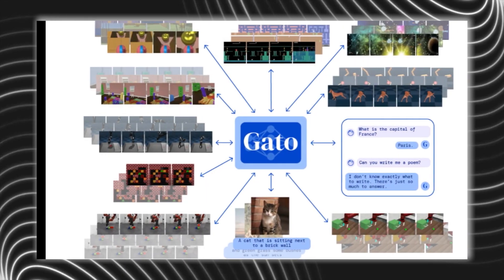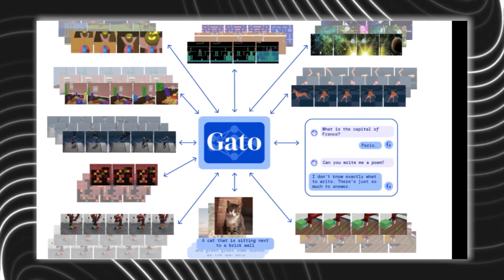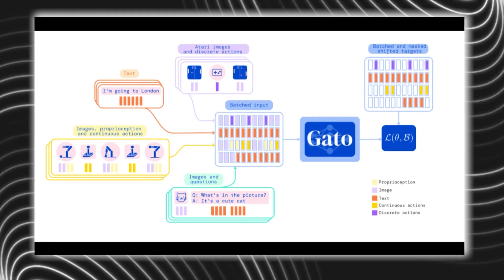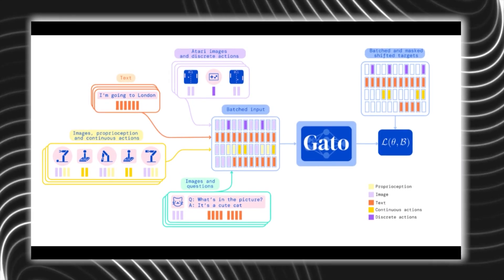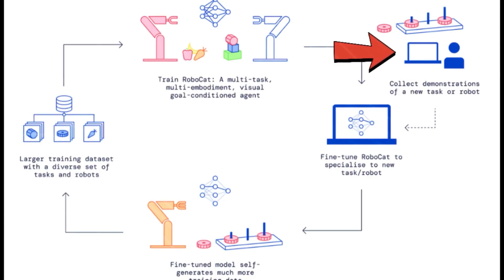This experiment demonstrates the impressive capability of RoboCat to transfer its knowledge across various robot embodiments, making it extremely versatile and also reducing the time and money it would take to train or program for every robot arm.